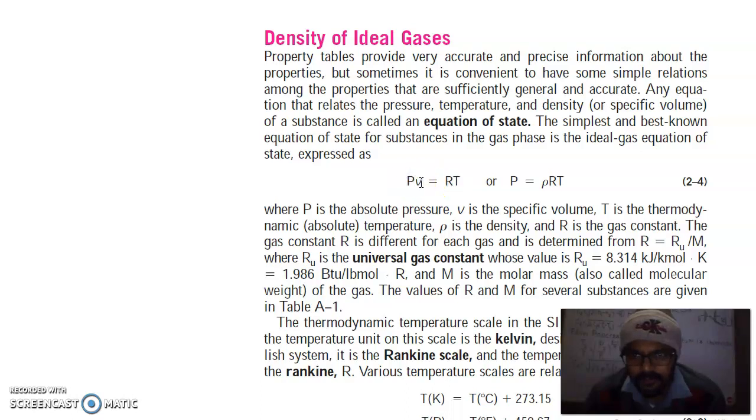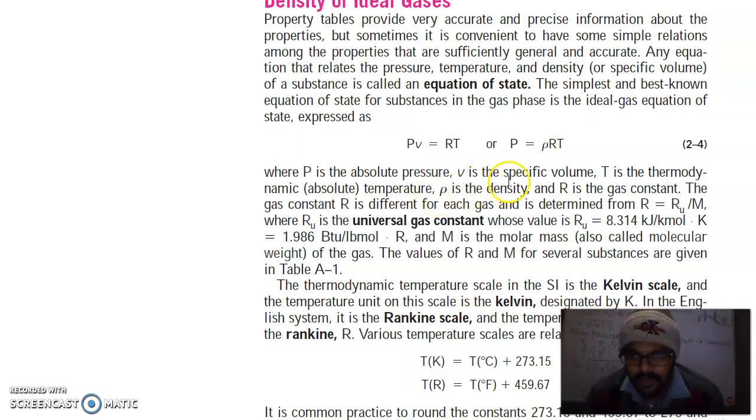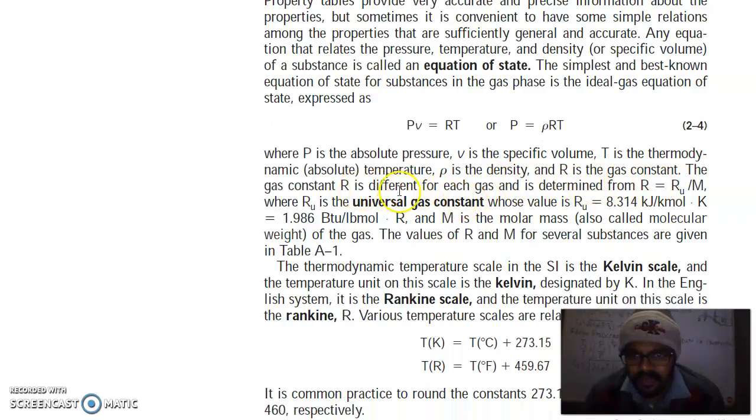P is pressure, V is volume, R is universal gas constant and T is temperature in Kelvin. Where P is absolute pressure, V is specific volume, T is the thermodynamic absolute temperature, rho is the density and R is the gas constant. The gas constant R is different for each gas and is determined from R equals universal gas constant divided by its molar mass.